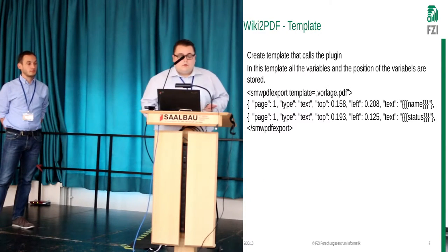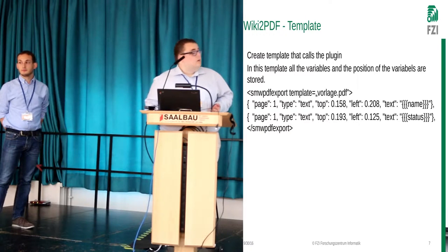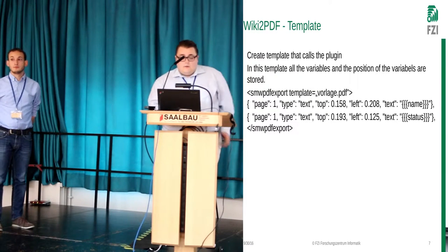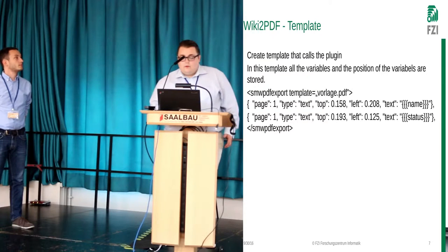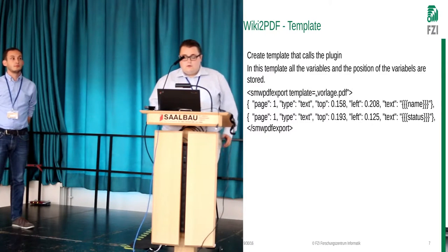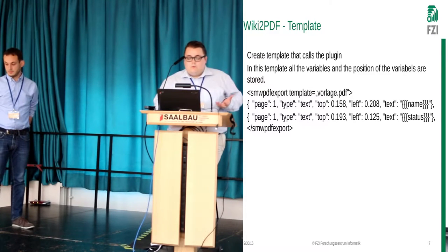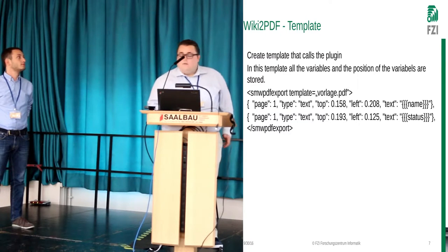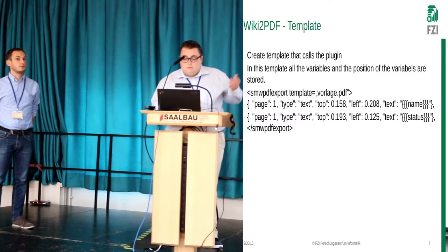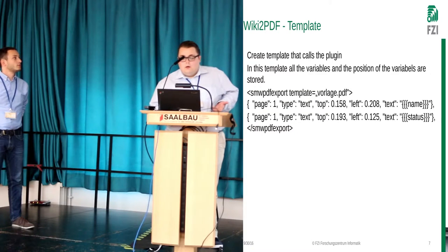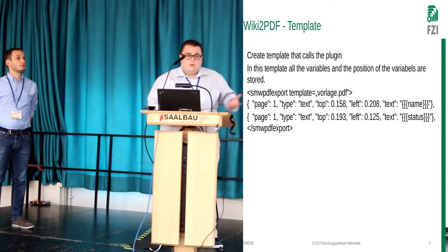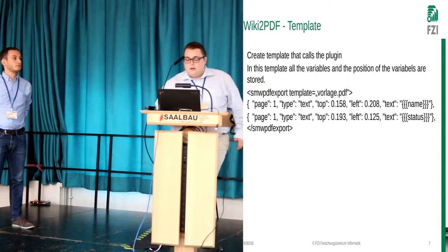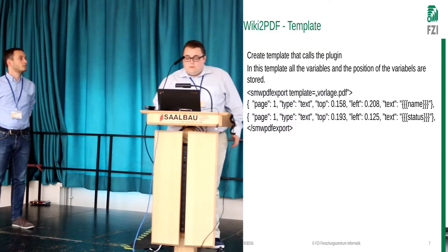How do we do it? First, we create a template that calls our plugin. This template stores all the variables and the positions of those variables. Here's a quick example: this is how we call our plugin, this is the parameter for which template to use — just the empty PDF file — and here you give all the parameters. This is the text for our first page, this is the position where the variable should be written, and this is the name of the variable. In this case, we want to write our name at this position on page one.